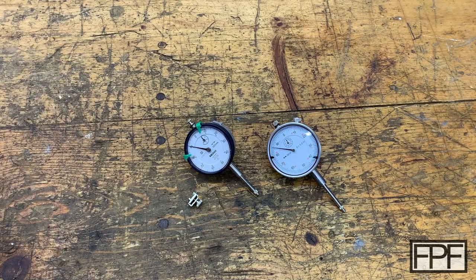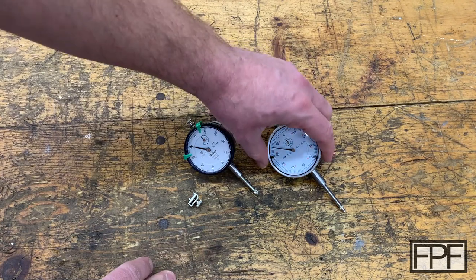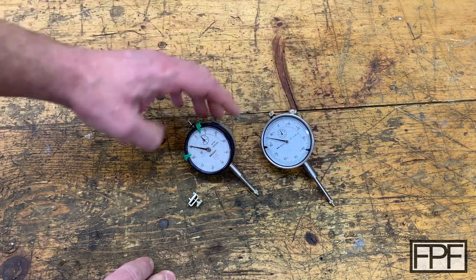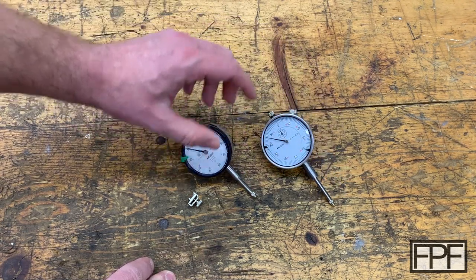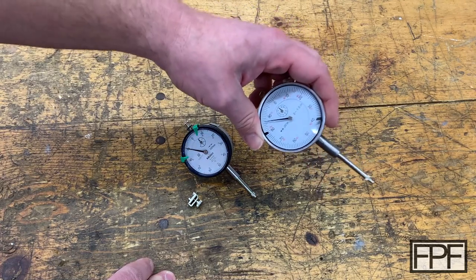So what I've got on the workbench this week is two dial indicators and one of these is imperial, this is inch, and one of these is metric. And this inch one is on the cheaper side, this is just a generic one, although actually quite impressed with it.